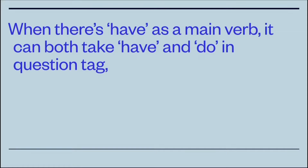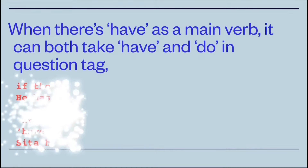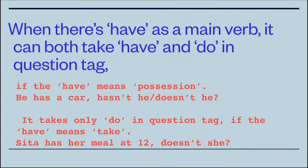When 'have' is used as a main verb, the tag can take either 'have' or 'do' depending on the situation. If 'have' means possession — 'He has a car' — you can make 'hasn't he' or 'doesn't he.' But if 'have' means 'take,' for example 'Sita has her meal at 12' — meaning she takes her meal — the tag is 'doesn't she.'